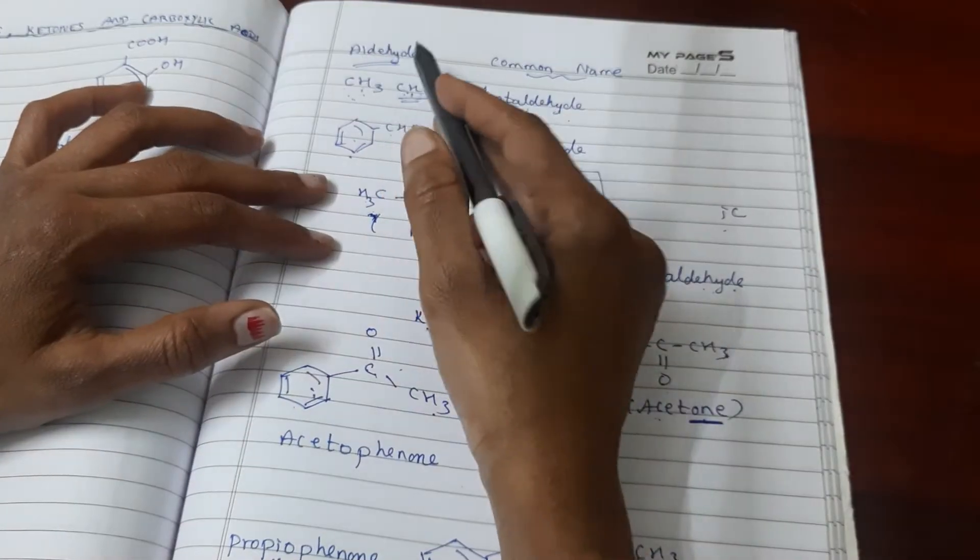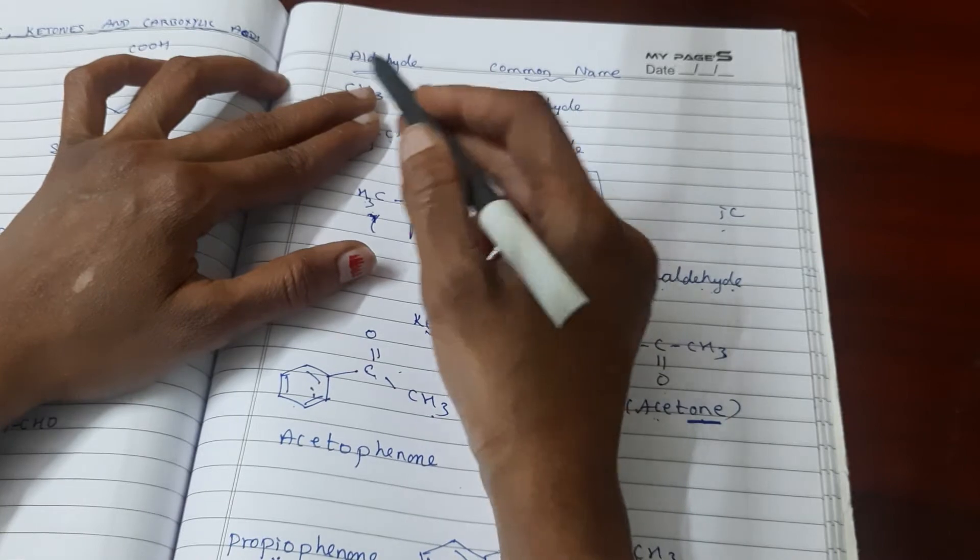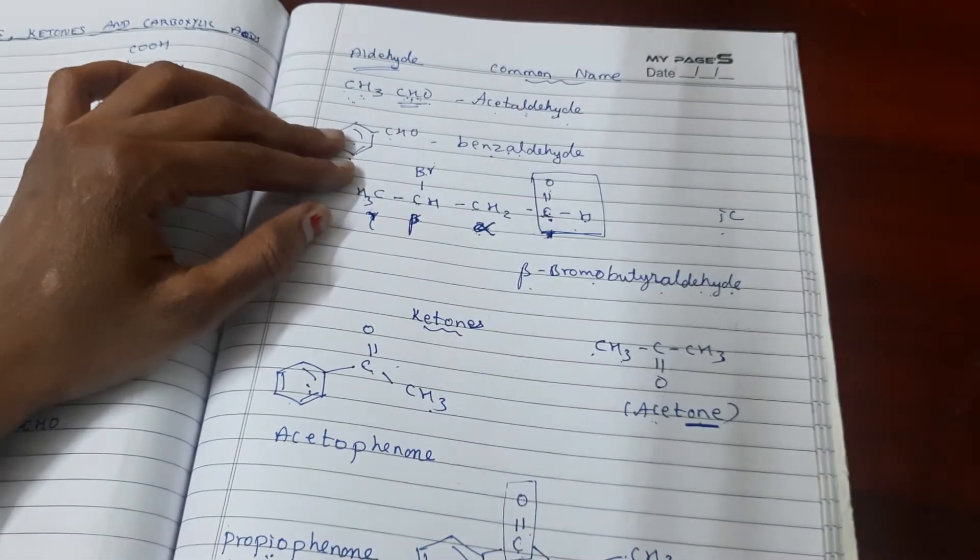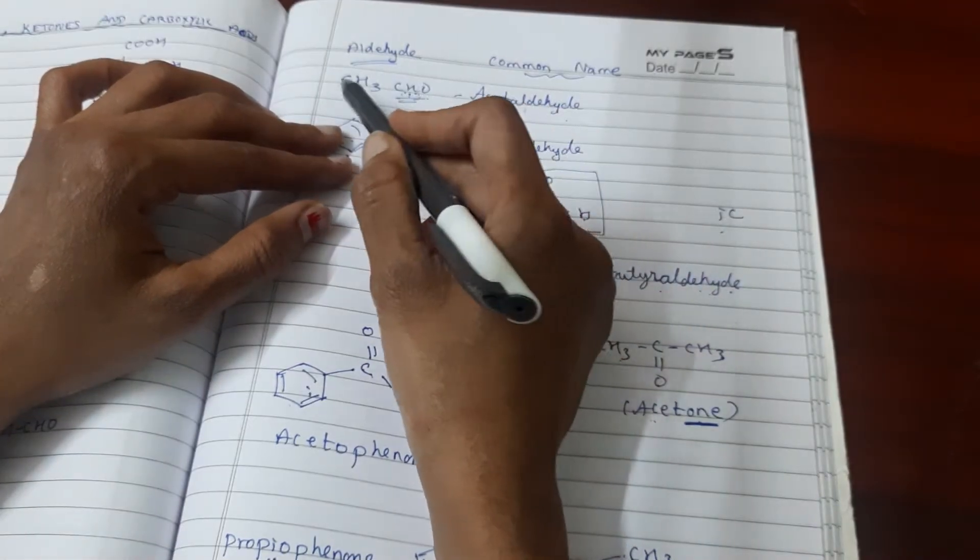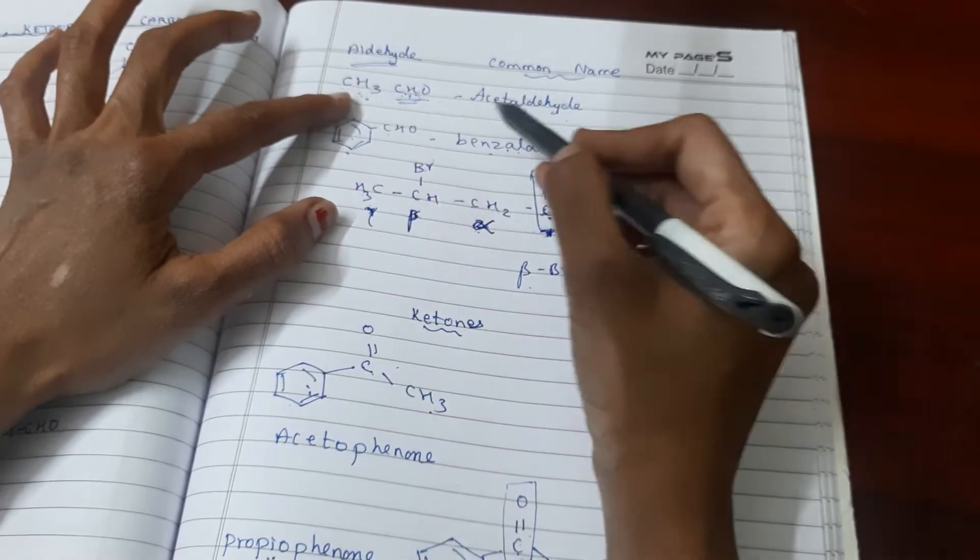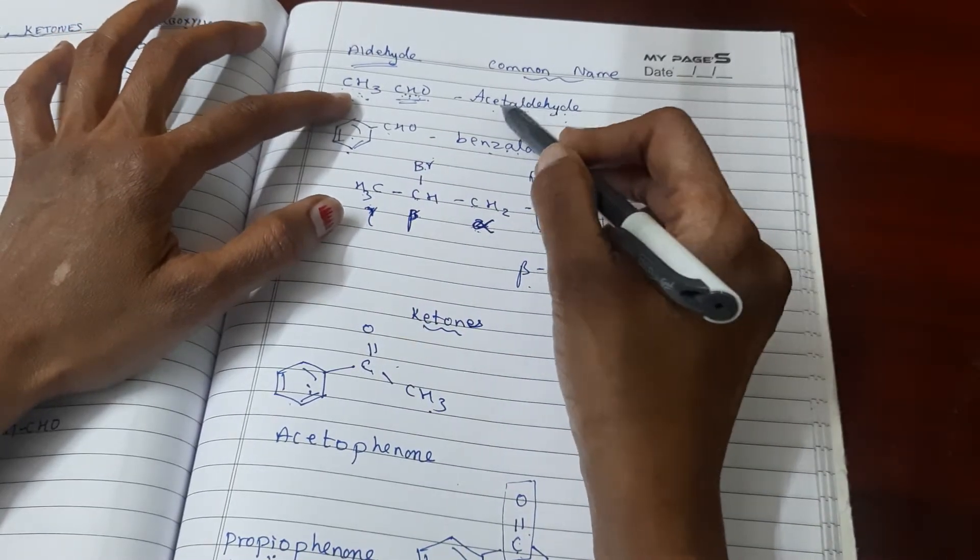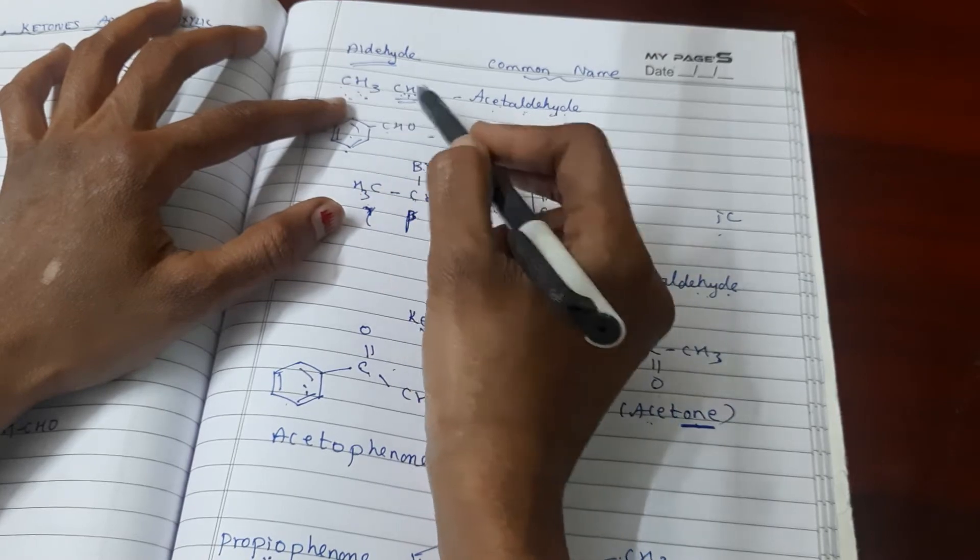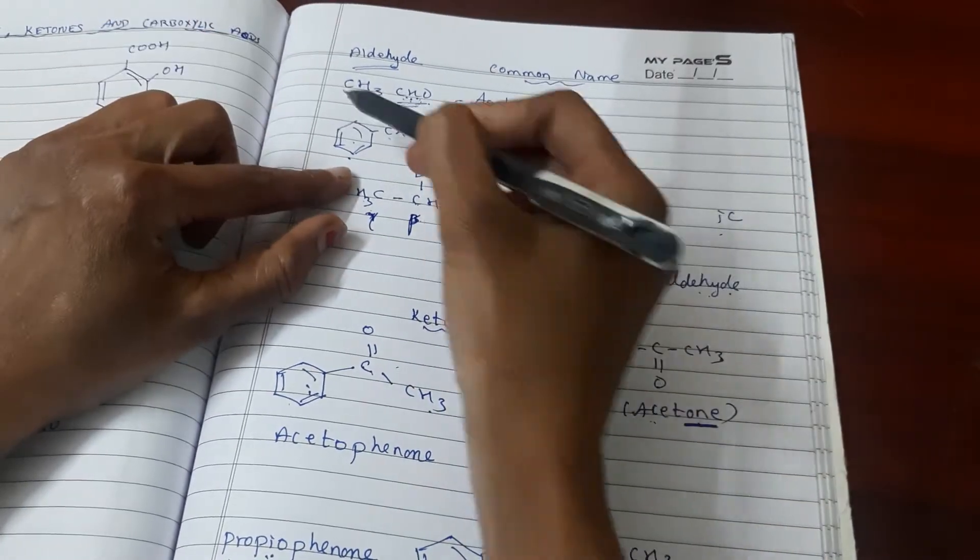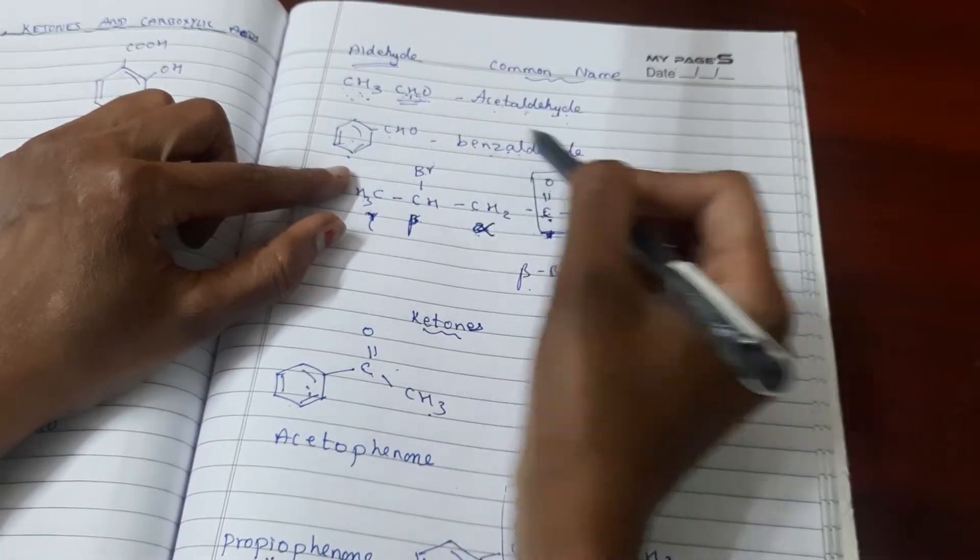First, aldehyde has a CHO functional group. When CHO is attached to CH3, this is acetaldehyde. In the simplest structure, this is the aldehyde group. CH3-CHO is acetaldehyde. When the aldehyde group is attached to benzene, this is benzaldehyde.